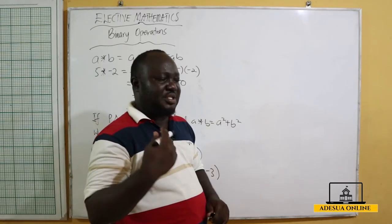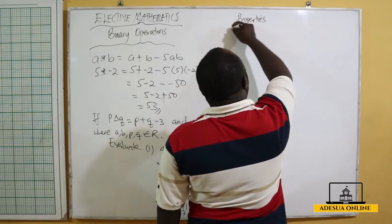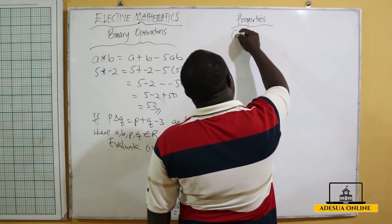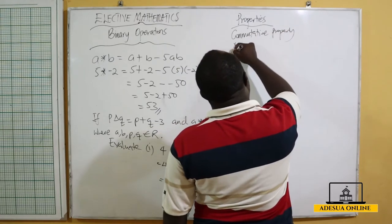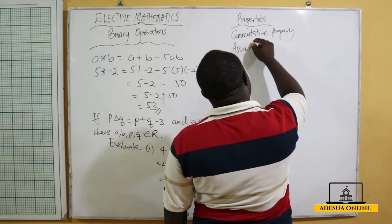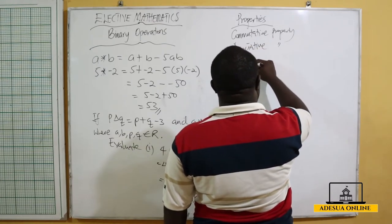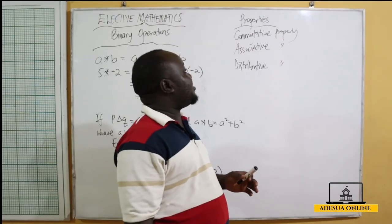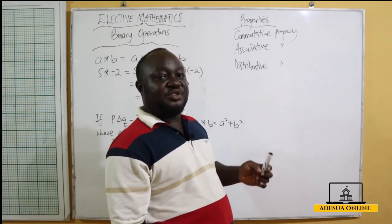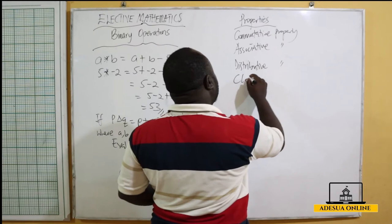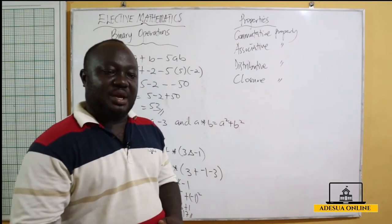There are some properties we can talk about in binary operations. We have the commutative property, the associative property, the distributive property, and the closure property. We are going to pick each of them and solve an example.